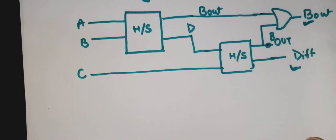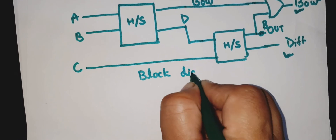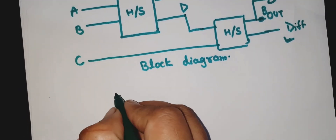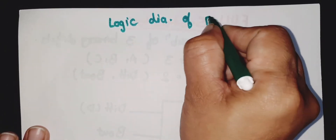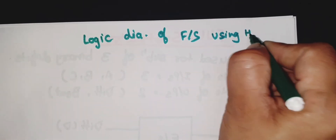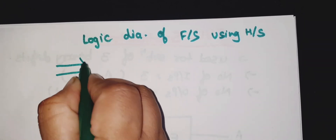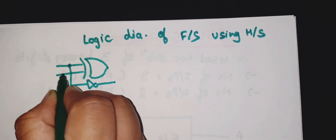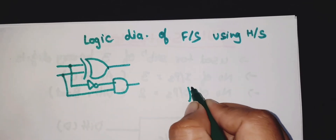Now using this block diagram, let's draw the logic diagram of the full subtractor using half subtractors. We will draw two half subtractors — this is our first half subtractor and this is the second half subtractor.